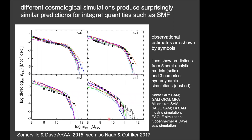A comparison from a 2015 review paper shows the stellar mass function from different cosmological hydrodynamic simulations and semi-analytic models. At redshift zero, these line up very well because they were all calibrated to the same observations. Most were not calibrated at high redshift, however, so the lines start to spread apart — different simulations give slightly different predictions as you go to higher redshift.